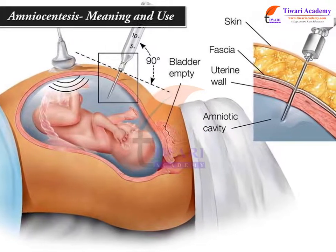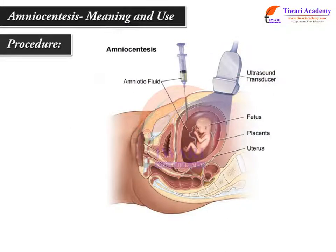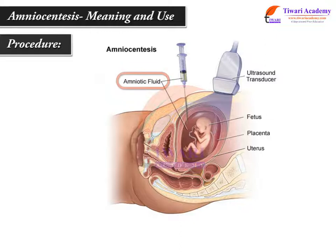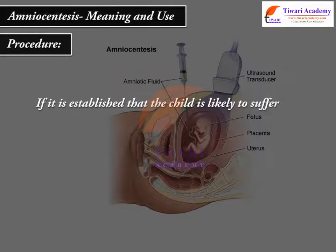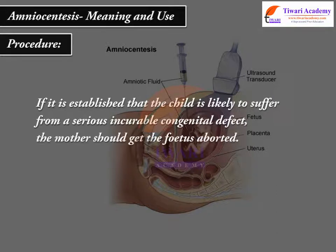Birth control and amniocentesis: Amniocentesis is a procedure where amniotic fluid surrounding the developing embryo is sampled. Amniotic fluid contains cells from the skin of the fetus and other sources. These cells can be used to determine the sex of the infant, to identify some abnormalities in the number of chromosomes, and to detect certain biochemical and enzymatic abnormalities. If it is established that the child is likely to suffer from a serious, incurable congenital defect, the mother should get the fetus aborted.